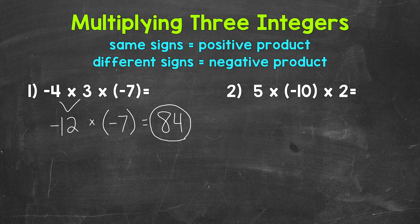Now I do want to mention one more thing before moving on to number two, and it has to do with the order in which we solved the problem. Since we're only working with multiplication, we can do three times negative seven first and still get the same answer. This is because of the associative property — it's how we group our factors. Factors are the numbers we are multiplying.